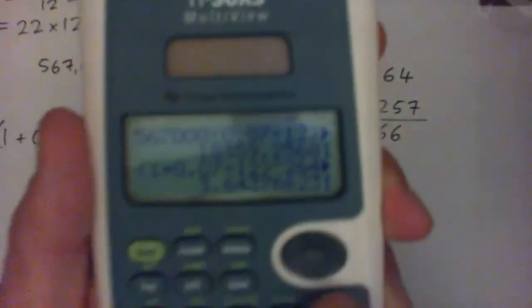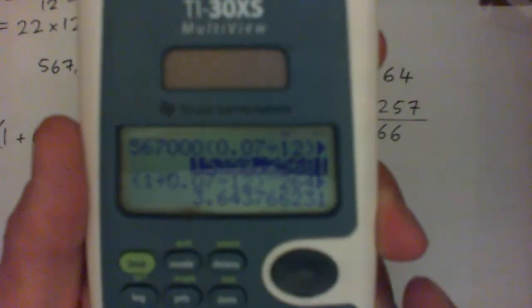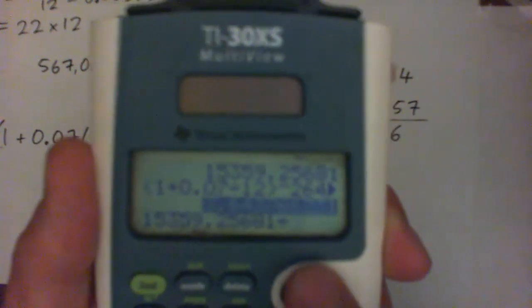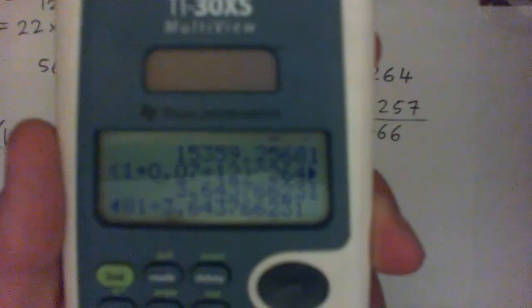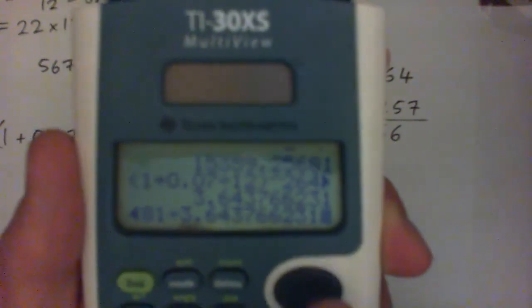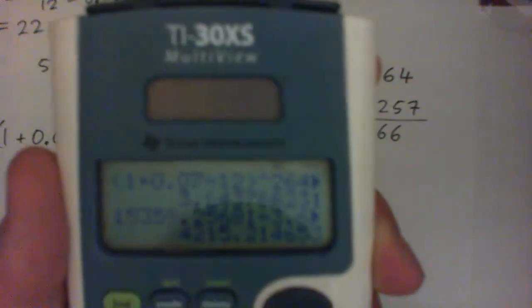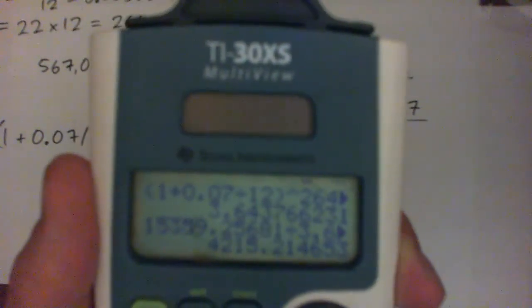But in the calculator, I'm actually going to do this. I'm going to go up, select the 15,000 number, press enter. Then I'm going to hit divide. Then I'm going to go up, select the 3.64 number, hit enter. And now it'll put that over the 15,000 over the 3.6. And then press enter. And now it's 4215.21, right?